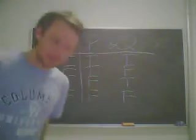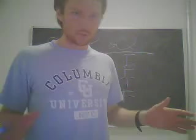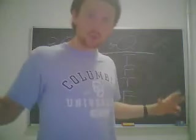And conjunction just means that the whole sentence is true when each of the smaller sentences are true, when P is true and when Q is true. That's when P and Q is true.